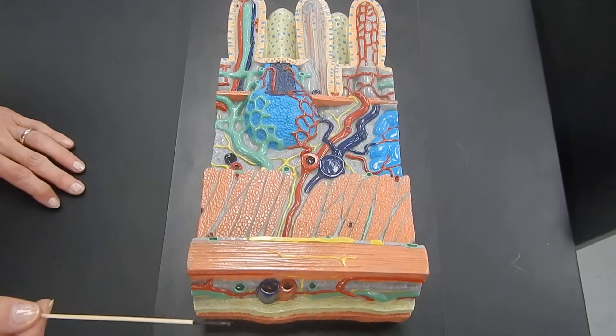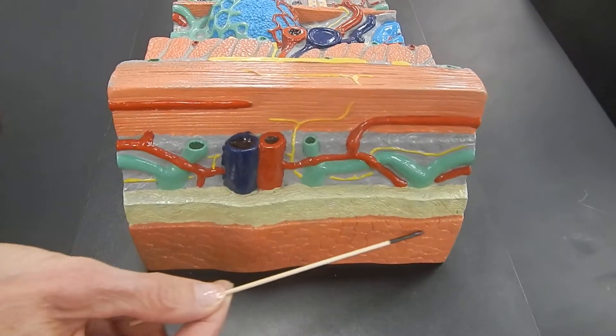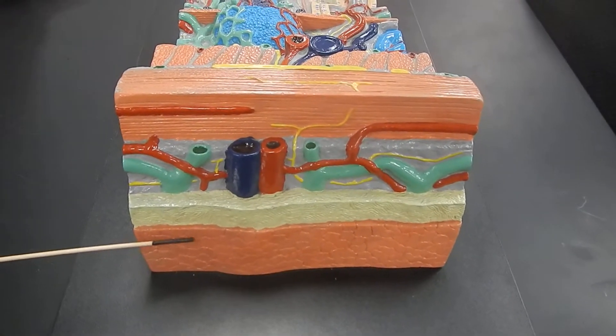On the very outside of the intestine, there is epithelial tissue, and this layer is called the serosa.